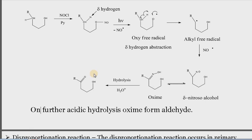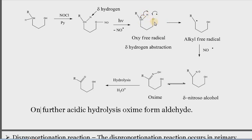One question may arise: why does only the delta hydrogen get abstracted? The answer is hidden in the structure. During the shifting of this hydrogen, a six-membered transition state is formed — one, two, three, four, five, and six. Six-membered cyclic structures, whether transition states or cyclic compounds, are more stable than five- or seven-membered structures. So only by shifting this delta hydrogen is the six-membered transition state formed, and this stability is responsible for the abstraction of the delta hydrogen.